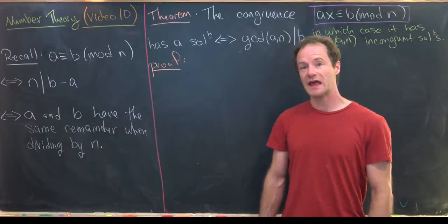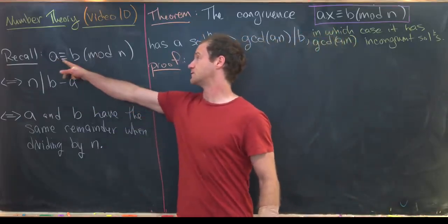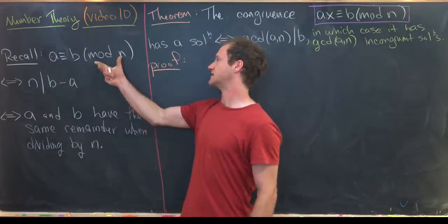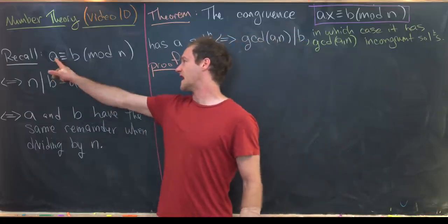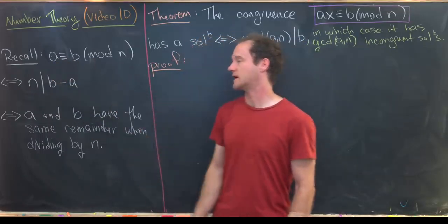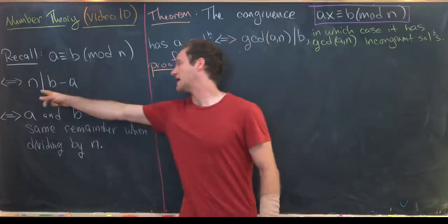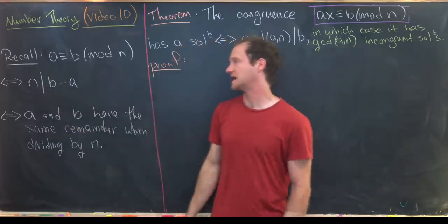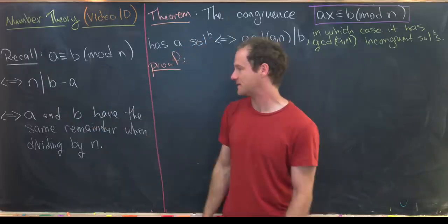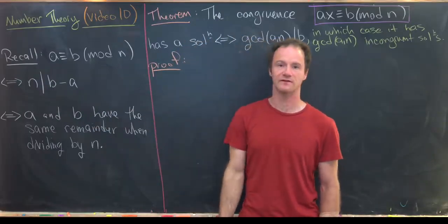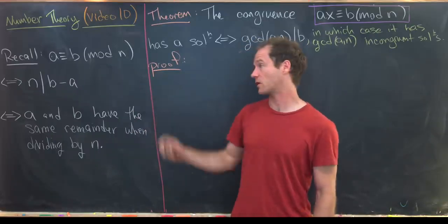We say a and b are congruent mod n, written with a triple equal sign and parentheses with mod n. We read this as 'a is congruent to b mod n.' We define this by n dividing b minus a, which is equivalent to a and b having the same remainder when dividing by n.